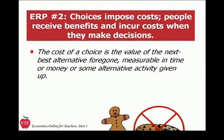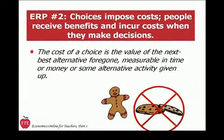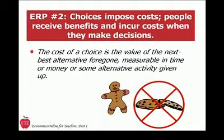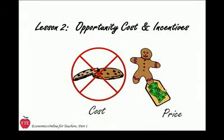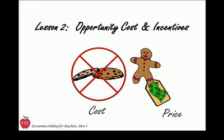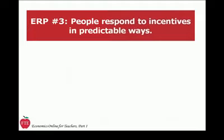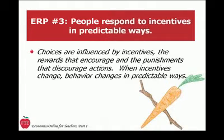The cost of a choice is the value of the next best alternative foregone, measurable in time or money, or some alternative activity given up. In lesson 2, we'll review this basic vocabulary and get ourselves into the habit of using economic terminology like cost and price more precisely than we tend to in daily conversation. Economic proposition number 3 — people respond to incentives in predictable ways — builds on our understanding that people weigh benefits and costs when making choices, and it sends us searching for the carrots and sticks that influence them.